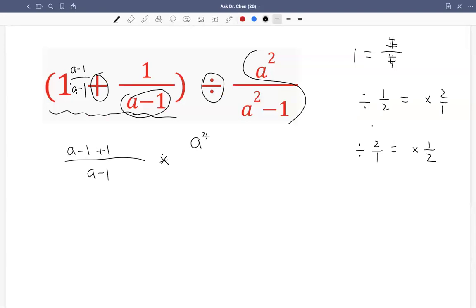Now, the denominator before changes to be numerator. The numerator before changes to be denominator. So back here, when minus 1 plus 1 adds up to be 0, so we just have a over a minus 1 multiplied by a squared minus 1.